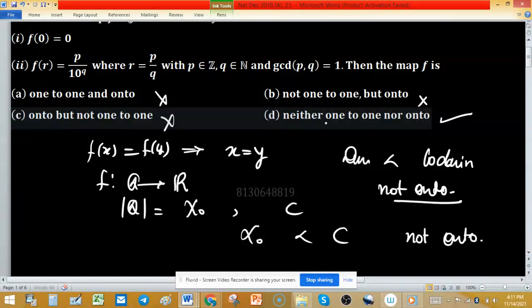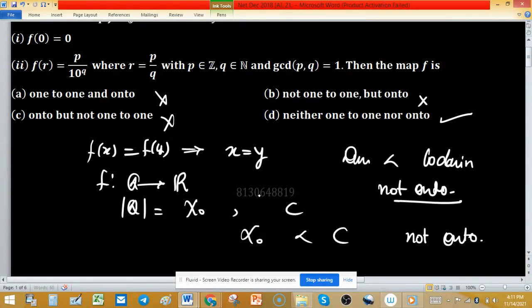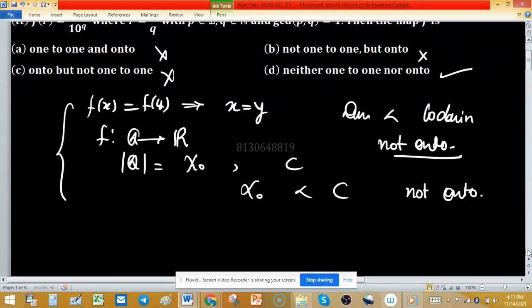But we have to justify that function is not one-to-one. So we will use this concept, as in starting of the video I explained, if f(x) equal to f(y) then x equal to y.